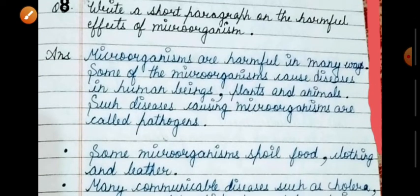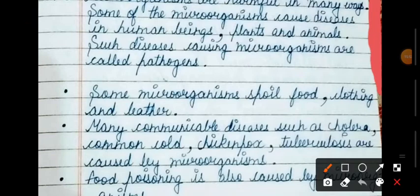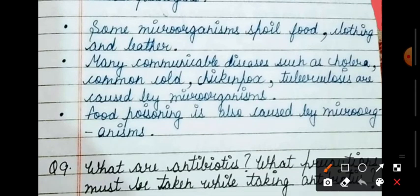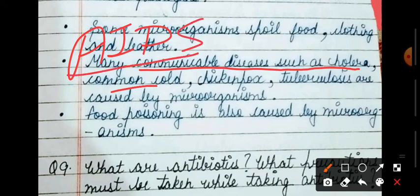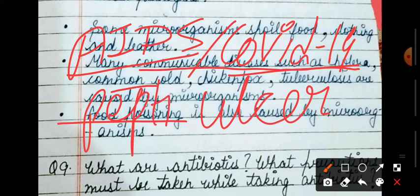Write a short paragraph on the harmful effect of microorganisms. Harmful effects: there are many varieties of diseases caused by microorganisms. We call them pathogens. Some microorganisms spoil food, clothes, and leather. Some microorganisms spread communicable diseases like cold, chicken pox. Viruses cause AIDS. Next is COVID-19, the most dangerous pandemic. This is also a harmful effect. Food poisoning and peptic ulcers are caused by bacteria.